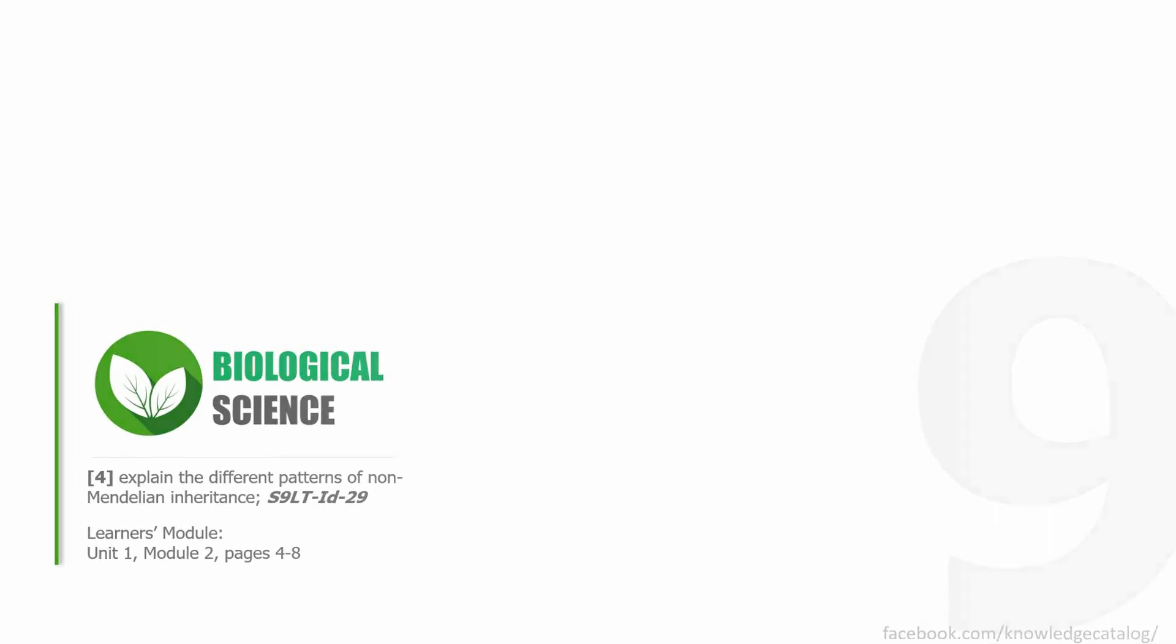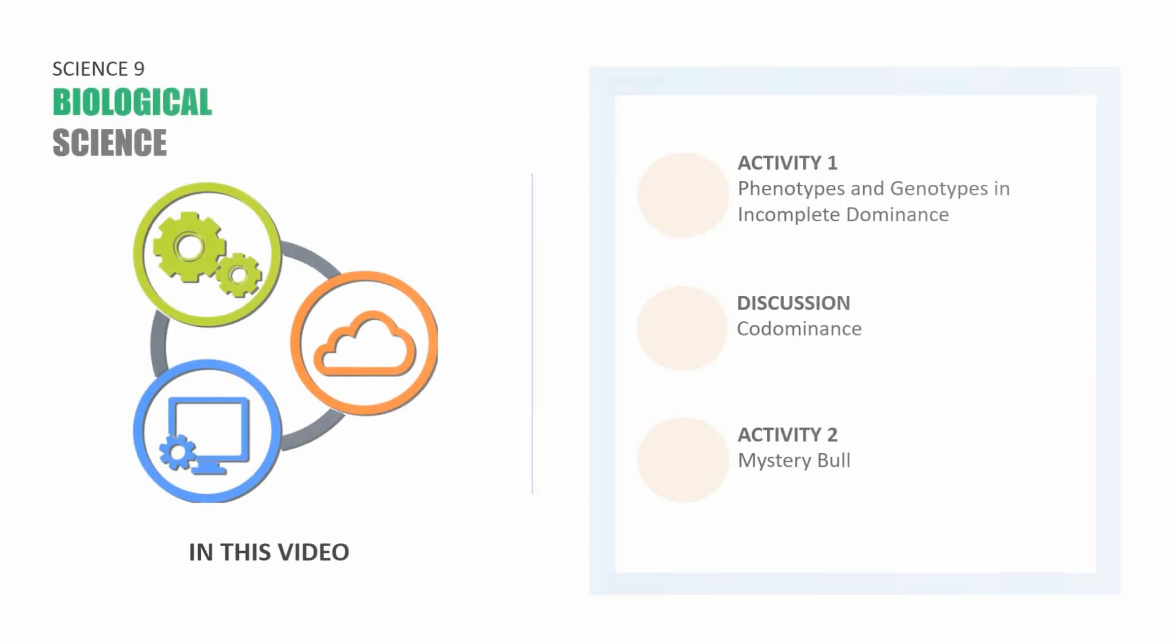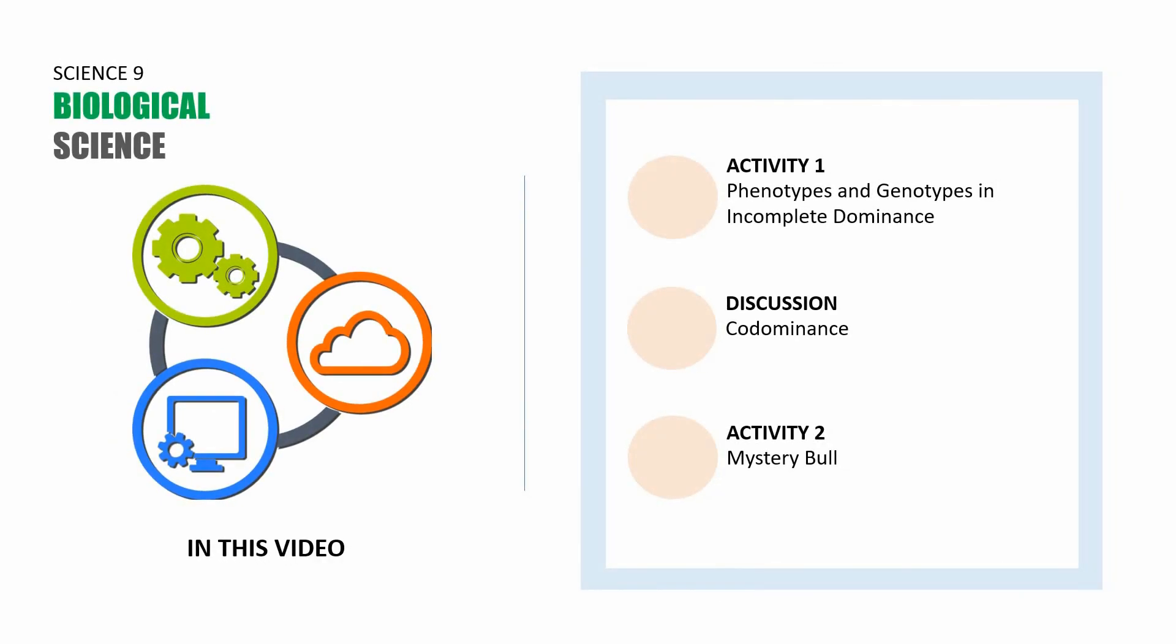Let's begin. This session is divided into the following parts. The first part is an activity, activity number 1, entitled Phenotypes and Genotypes in Incomplete Dominance. Part 2 is a discussion about codominance. Part 3 is activity number 2, Mystery Bull. Let us begin with part 1.